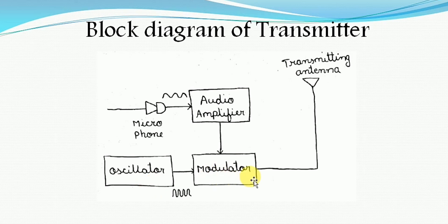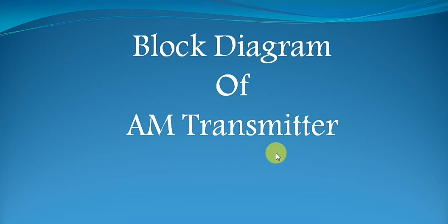The next block is the modulator. In the modulator, the message signal is superimposed with the high frequency signal. If the modulator type is an AM circuit used to generate or transmit an AM signal, then we call that transmitter an AM transmitter.